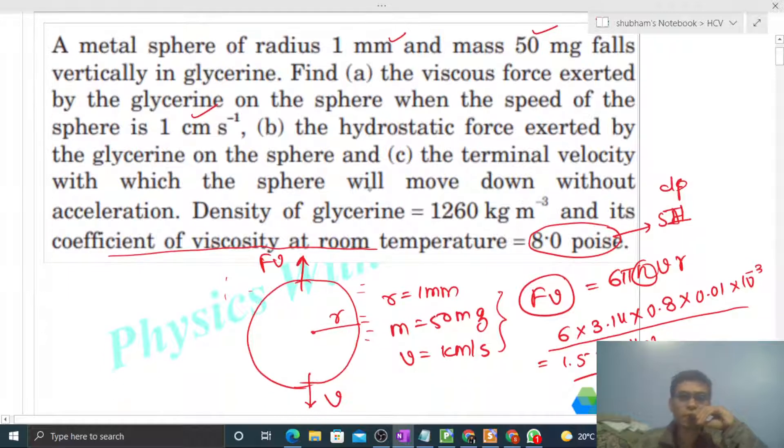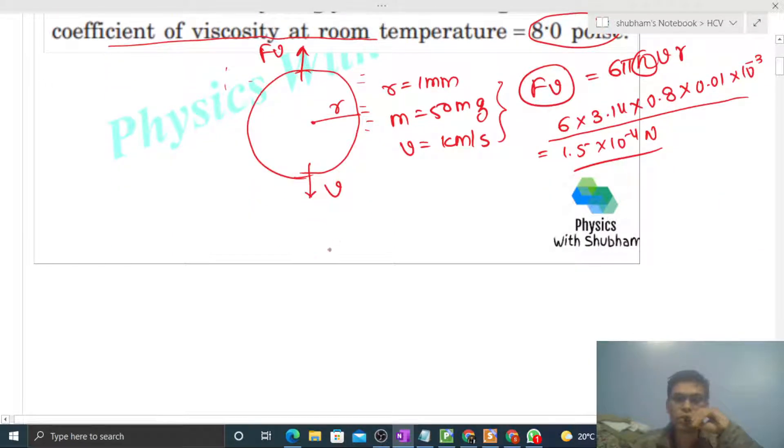Now let's check the hydrostatic force exerted by the glycerin on the sphere. Hydrostatic force is nothing but buoyant force. The magnitude is the volume of displaced liquid times density of the liquid times g.